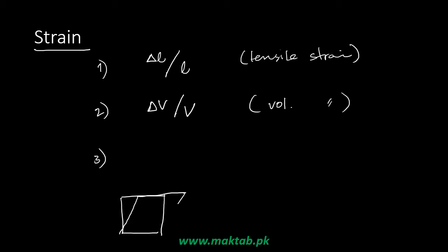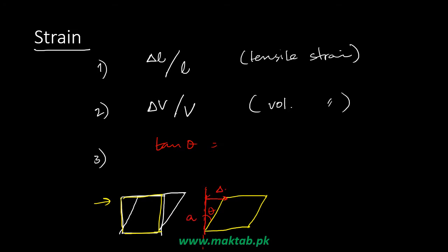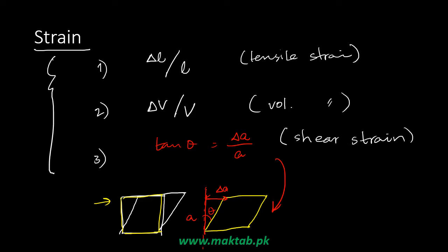Volume strain is the change in volume over original volume. If we change the shape, we define shear strain. For a specific shape — say a square deformed by a lateral force — we measure the angle theta, and shear strain is defined as tan theta, where delta_a is the lateral displacement and a is the original height. These are the three kinds of strains corresponding to the three kinds of stresses.